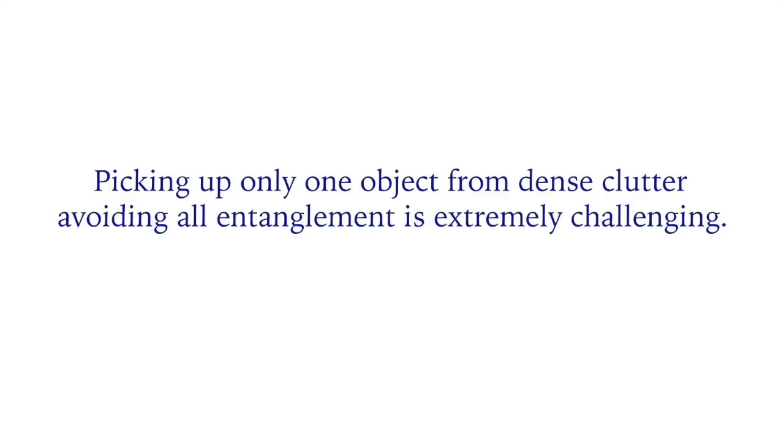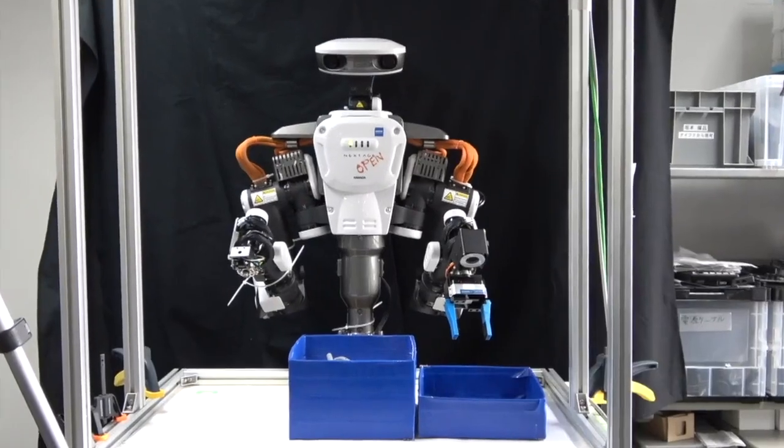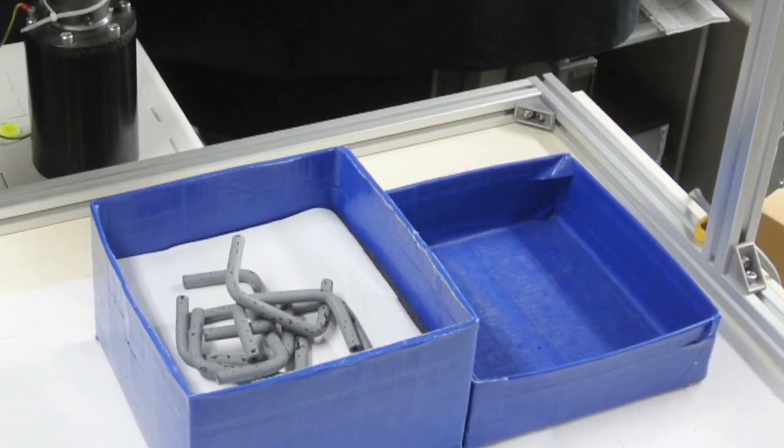In this work, we address the problem of picking up only one object without any entanglement for bin picking. Complex shaped parts in dense clutter are always tangled together.